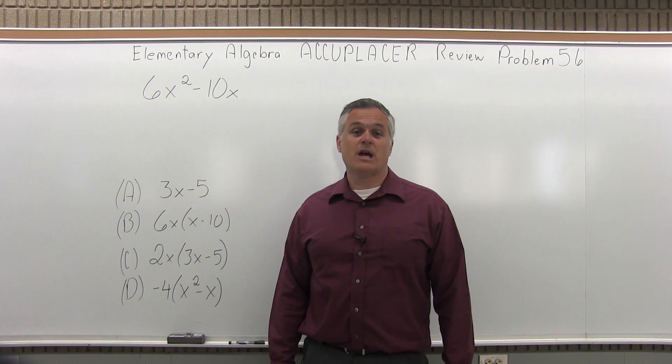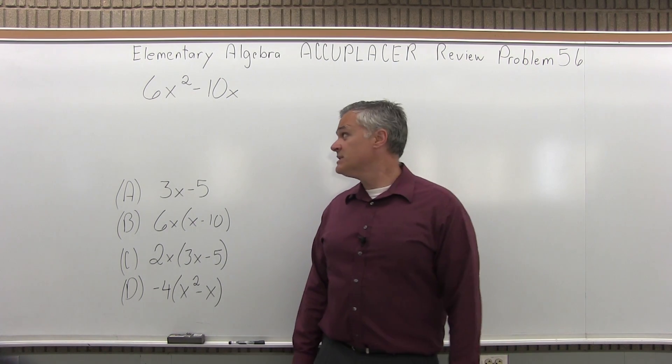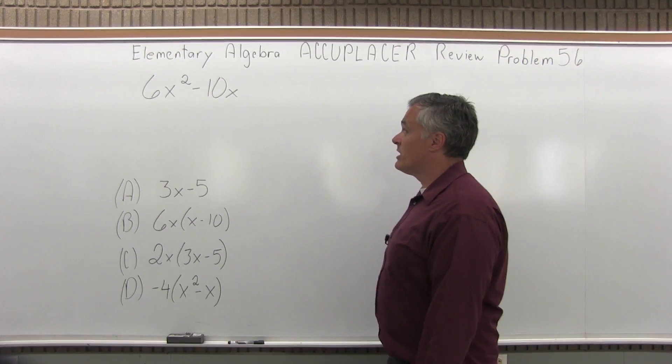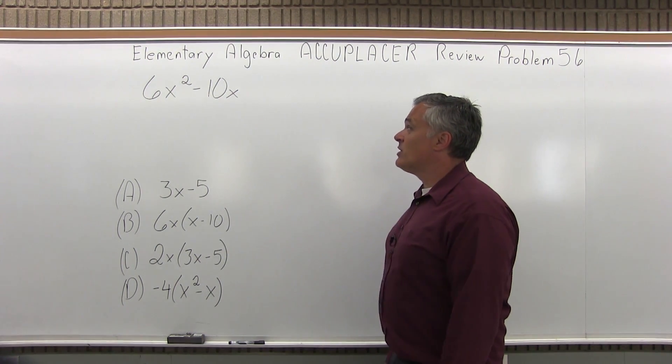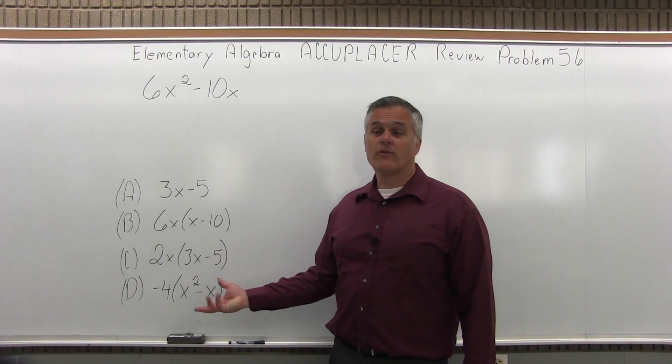This is the Elementary Algebra Accuplacer Review Problem 56. We have 6x squared minus 10x, and we want to try and match it up with one of four available options.